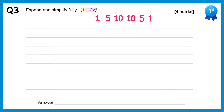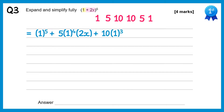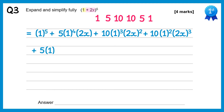So we start with 1 to the power 5, then plus 5 lots of 1 to the power 4 times 2x, then plus 10 lots of 1 to the power 3 times 2x squared, plus 10 lots of 1 to the power 2 times 2x cubed, plus 5 lots of 1 times 2x to the power 4, plus 2x to the power 5.